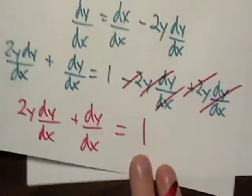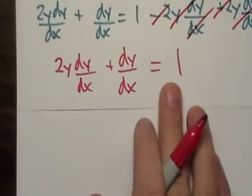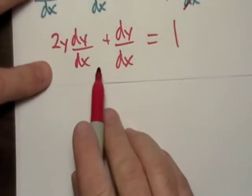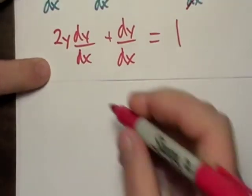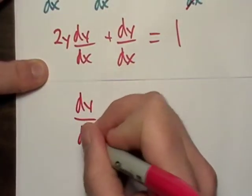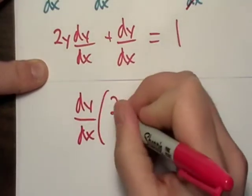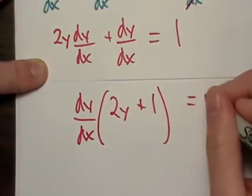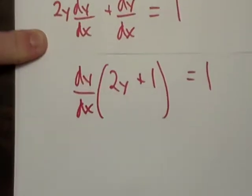You might not recognize it at first. But if we just treat this dy/dx just like a variable, we can actually just factor it out. And what do we get? We get 2y plus one, don't we?